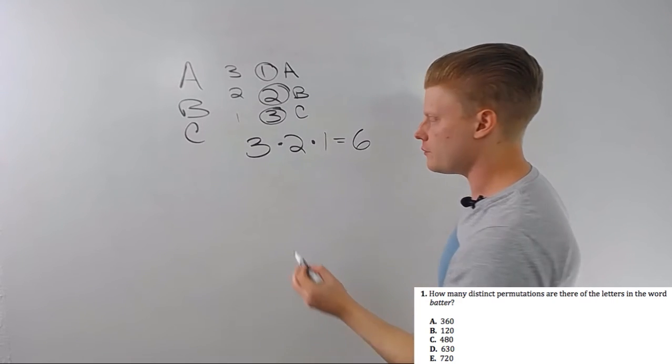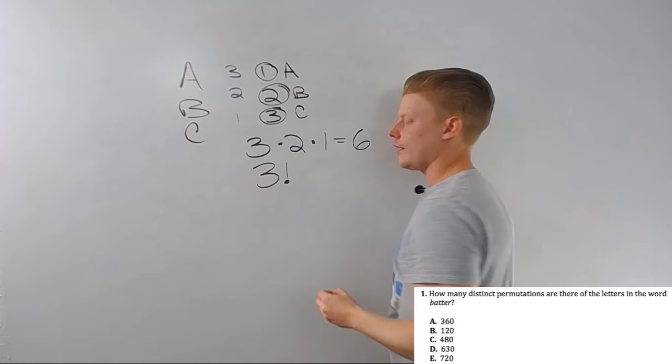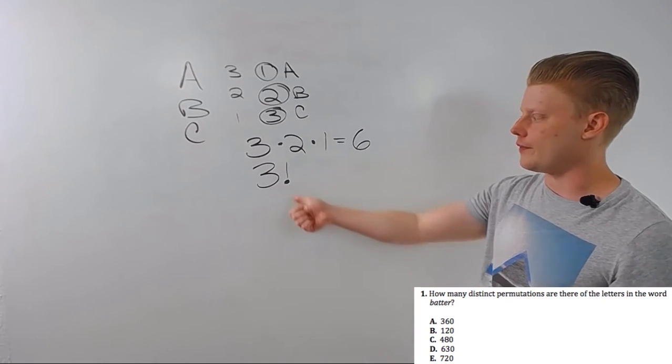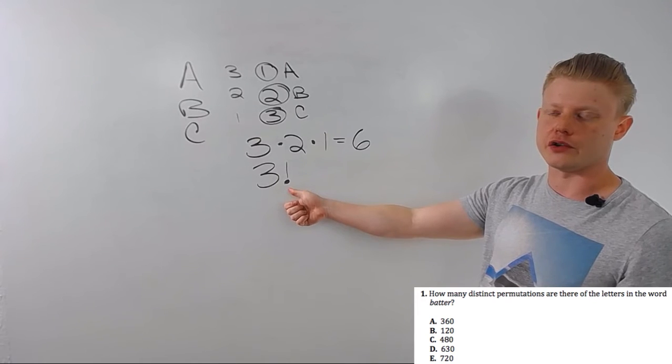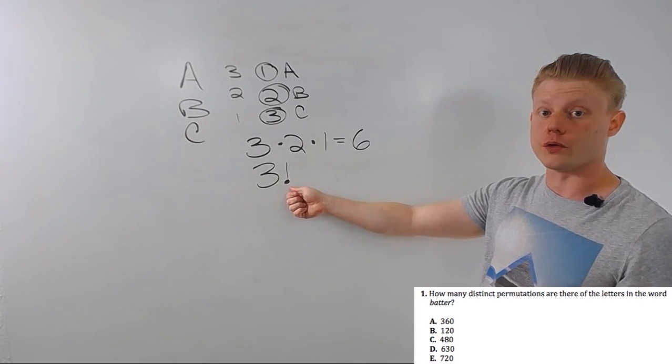You have probably been exposed to this like this. Three exclamation point. Three factorial. You can find this on a scientific calculator as one of the second functions. On a graphing calculator, it's number four in the probability menu.